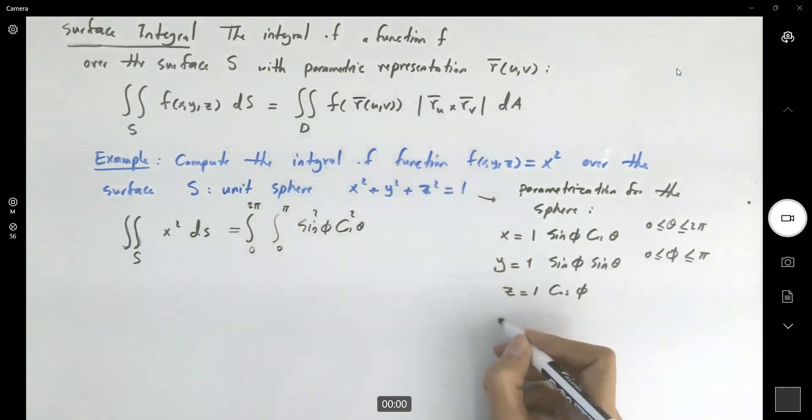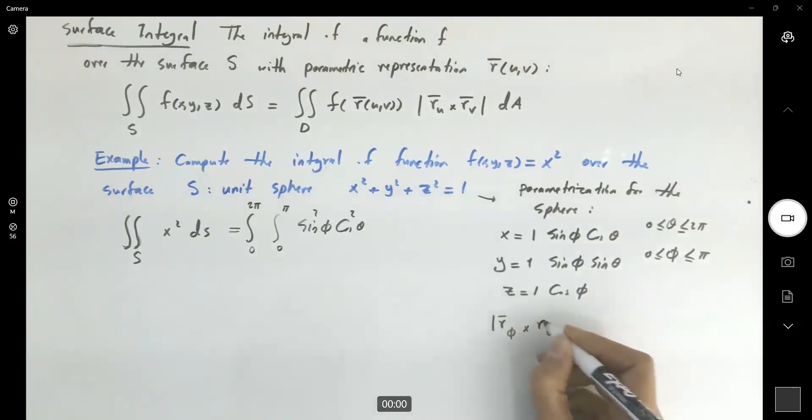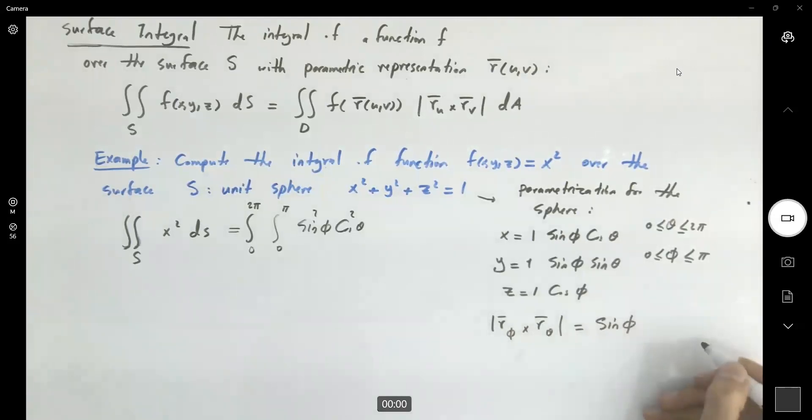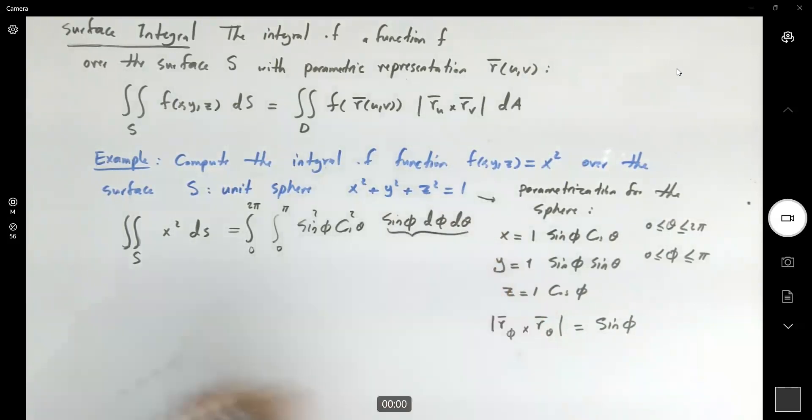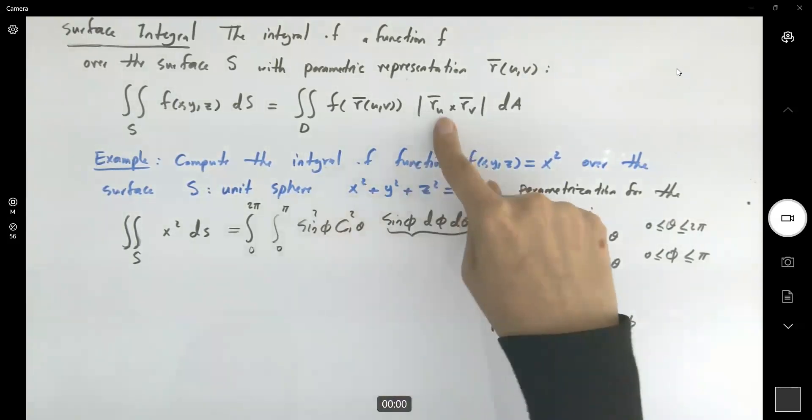From previous example that we did for the surface area, we saw that the magnitude of r_φ cross r_θ is equal to a sin φ, but a is equal to 1. So here you have sin φ. You're going to add sin φ dφ dθ.